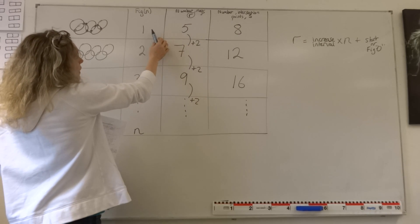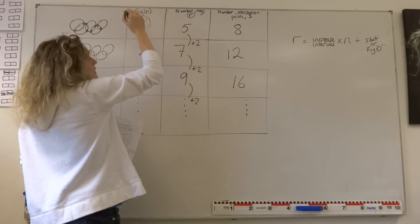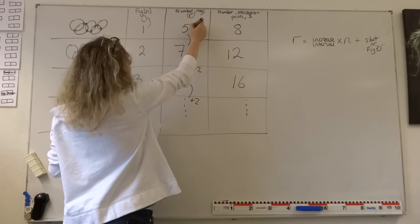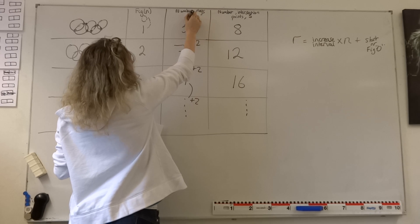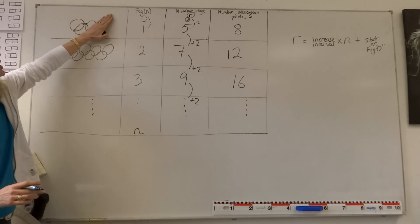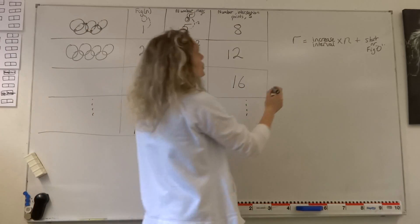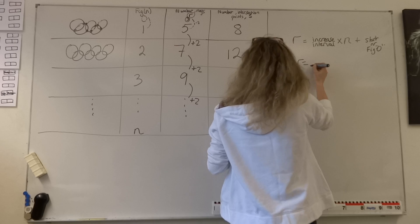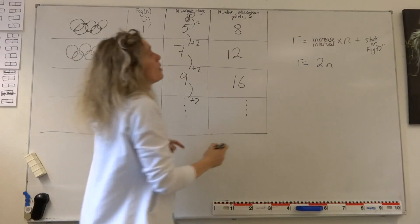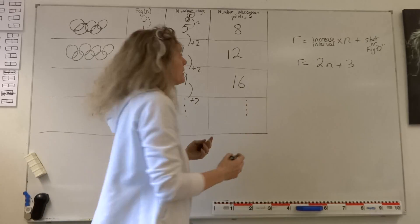The start number is how many rings there were in figure number 0. In figure number 1 we have 5 rings. If we go back one step — since we were adding 2 each time — we subtract 2, giving us 3 rings in figure number 0. So our starting number is 3 rings. The formula for number of rings is 2 lots of n, because it's increasing by 2 each time, plus 3.